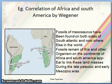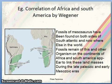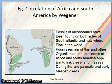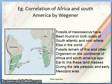The correlation of Africa and South America by Alfred Wegener in 1912 was proof for the plate tectonics concept. Fossils of Mesosaurus have been found on both sides of the South Atlantic and nowhere else in the world. The fossil remains on the continents of Africa and South America appear to link these landmasses during the late Paleozoic and early Mesozoic era. There is also evidence of the plants Glossopteris and Gangamopteris flora.